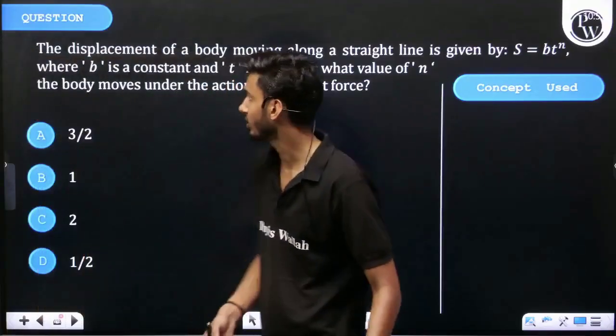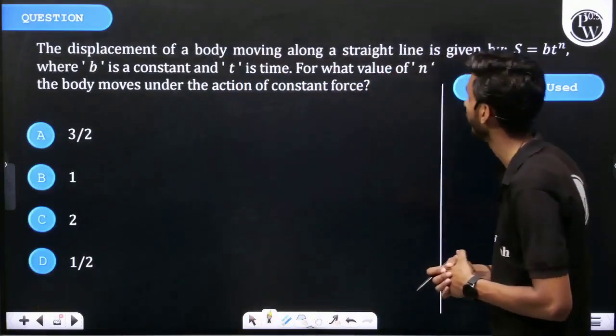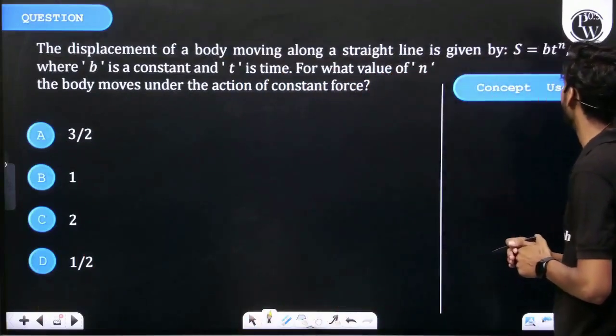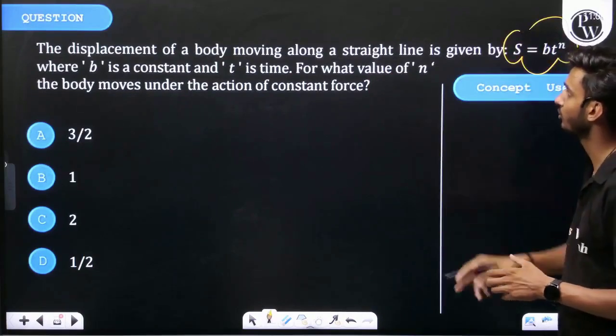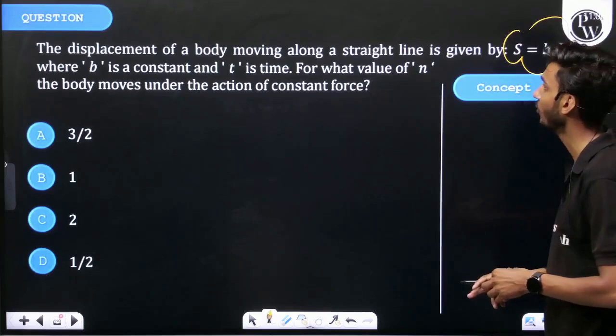Okay, let's see the question. The displacement of a body moving along a straight line is given by S equal to bt^n, where b is constant and t is time. For what is the value of n if the body moves under constant force?